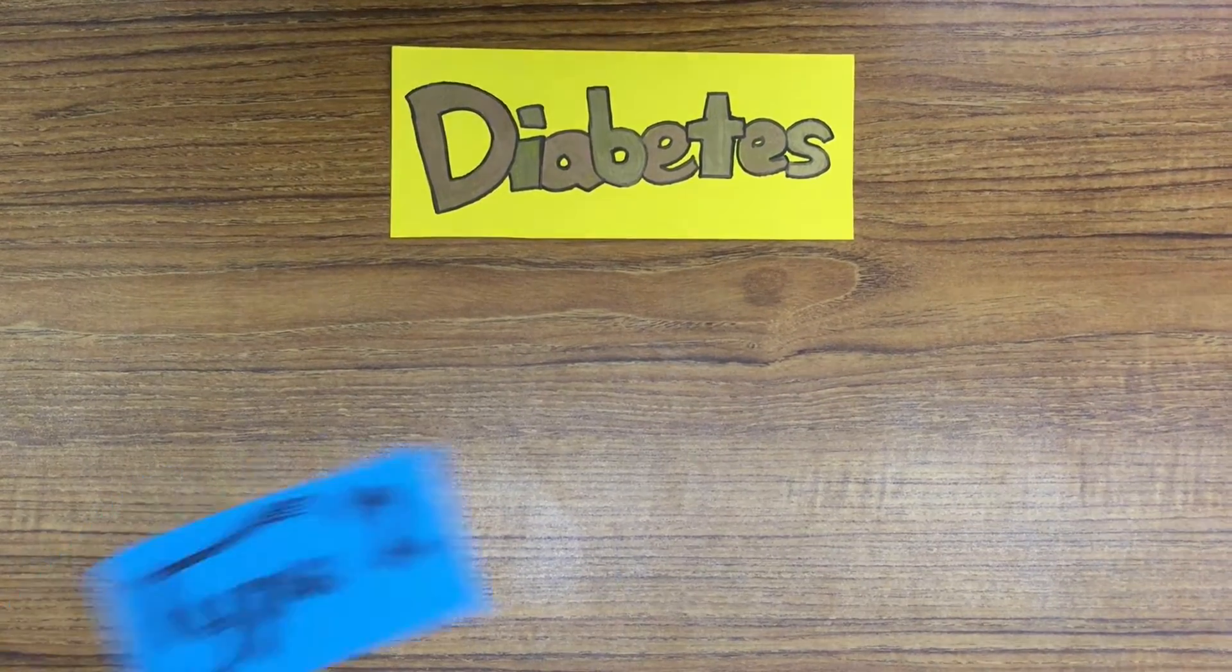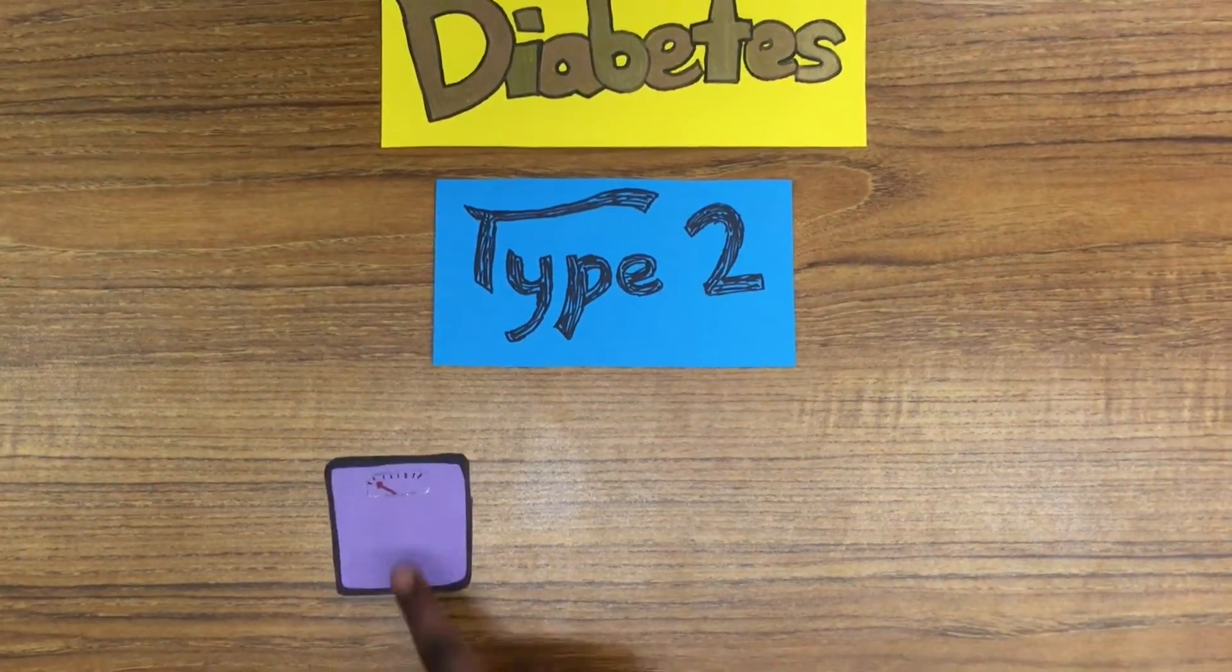Type 2 diabetes can be hereditary, but it can also develop when a person is overweight or not exercising regularly.